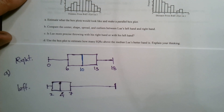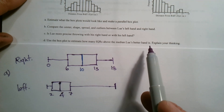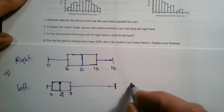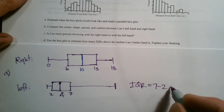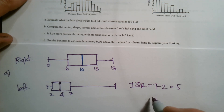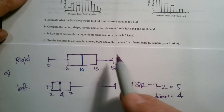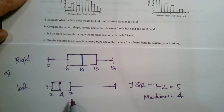Last one: using the box plot, estimate how many IQRs above the median Lou's better hand is. His better hand is his left — we already decided that. His IQR equals seven minus two, which is five. His median is equal to four. So we're really one IQR off from the median — the interquartile range and the median are very close together. So we'll estimate based on what we've got from the histograms. Definitely better with his left hand — there's our answer to this question.